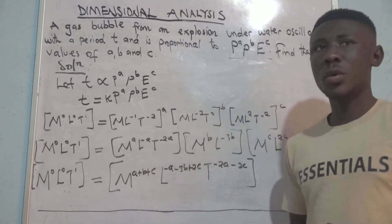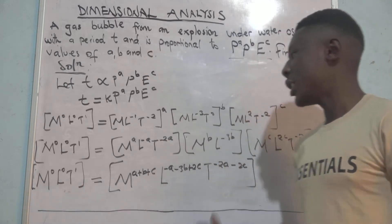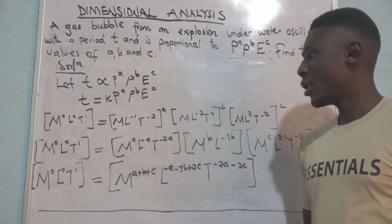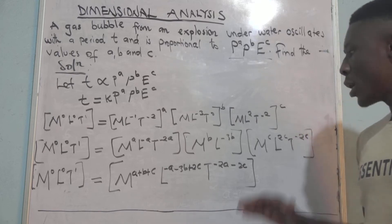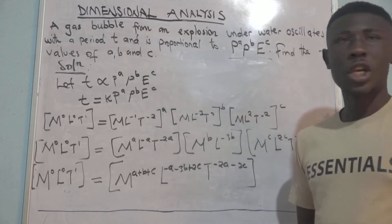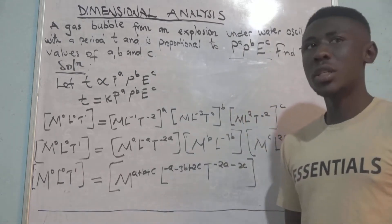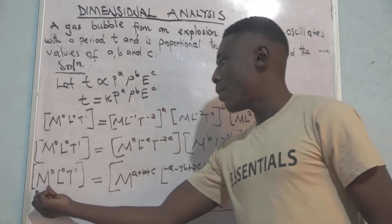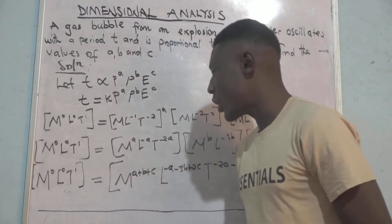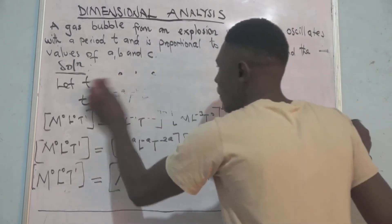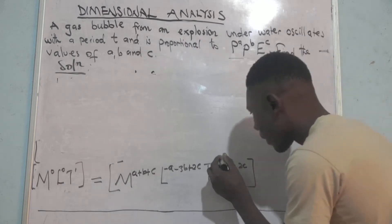We then apply the principle of homogeneity, which states that what is on the left-hand side must be dimensionally the same as what is on the right-hand side — meaning the equation is dimensionally consistent. Also, for exponential functions where the bases are the same on both sides, we equate the powers. So the power of M on the left equals the power of M on the right, and similarly for L and T.